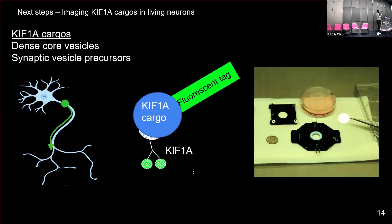Next we're going to do some live imaging of KIF1A cargos in live neurons. This is important because transport is a very dynamic event — there's a lot going on and a lot that can go wrong. What I showed before with the immunocytochemical staining was really just a snapshot of a given time of what is going on in the allocation of those cargos. Here I'll go through a typical workflow where we transfect in proteins that are essential cargos carried by KIF1A in vesicles like dense core vesicles and synaptic vesicle precursors. These proteins will be tagged with fluorescent proteins like GFP or RFP.